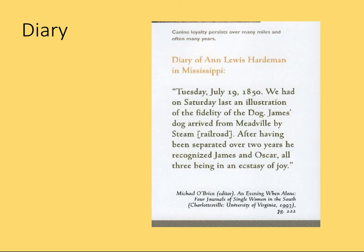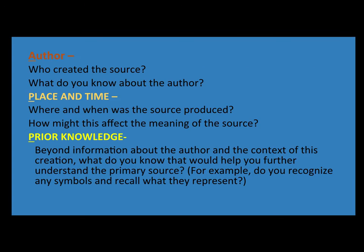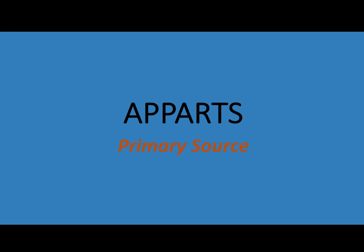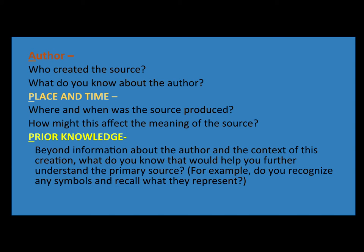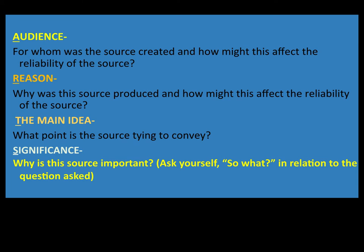When you analyze primary source documents, use AP PARTS: look at the author, place and time, prior knowledge, audience, reason, main idea, and significance.